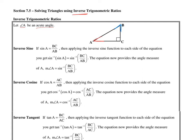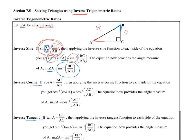Inverse sine: if sine of A equals BC over AB — where BC is the opposite side and AB is the hypotenuse — and you have BC and AB but don't know angle A, you would take the inverse sine of both sides. The inverse sine cancels out the normal sine, so on the right side you're left with the inverse sine of BC over AB, and angle A is isolated. The same applies for cosine and tangent.